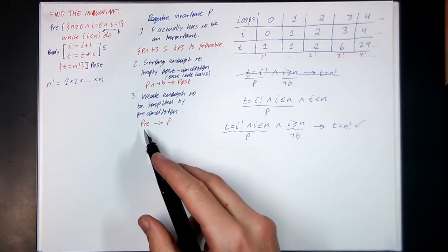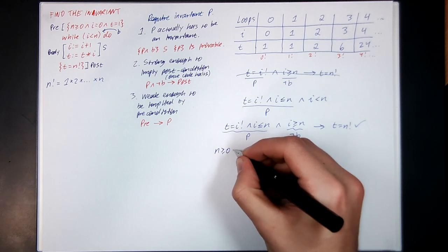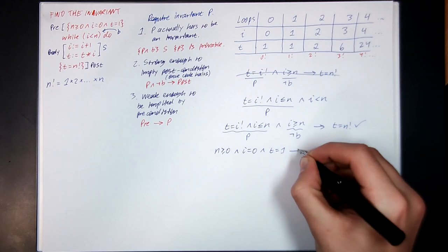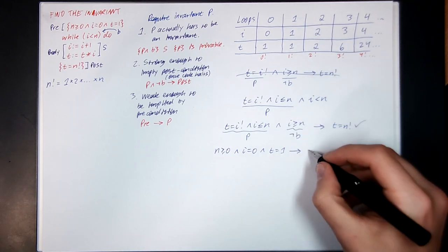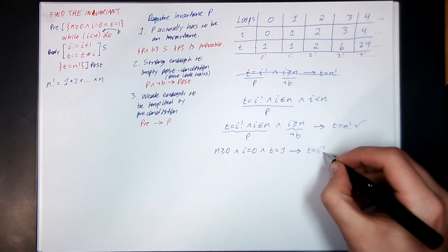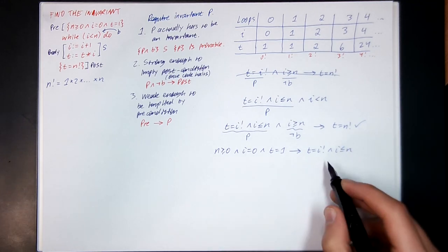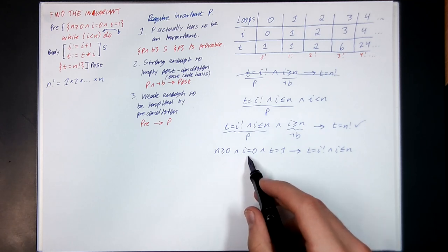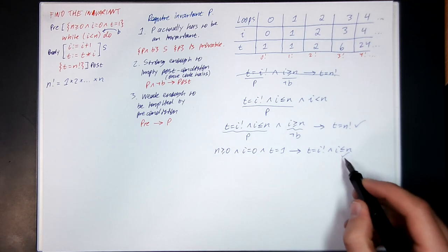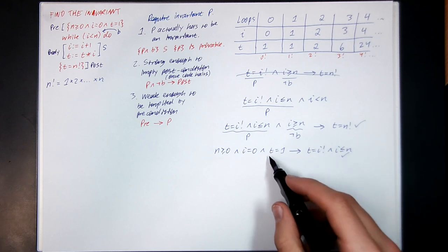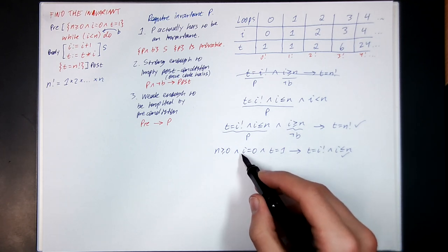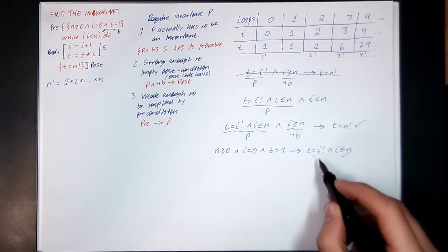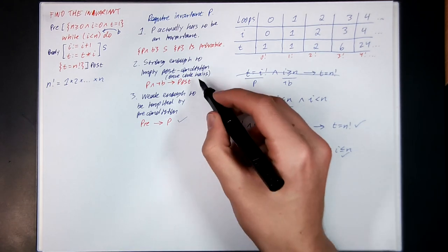Rule 3: does the precondition — n greater than or equal to zero, i equals zero, t equals one — imply P, which is t equals i factorial and i less than or equal to n? Well, if n is greater than or equal to zero and i equals zero, then i less than or equal to n definitely holds. And if i equals zero, then i factorial is 0 factorial, which is 1, and t equals 1. So rule 3 holds as well.